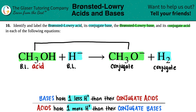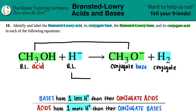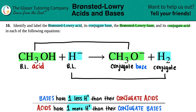Then you just do the same thing for the other pair. H minus has literally only one H. H2 has two hydrogens. The acid always has one more, so with two hydrogens versus one, H2 would be the acid — actually the conjugate acid. And H minus would be the Bronsted-Lowry base of the pair.